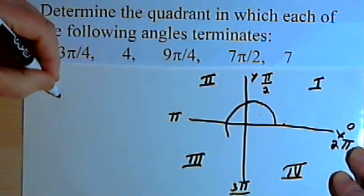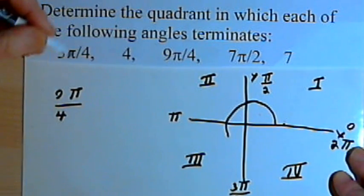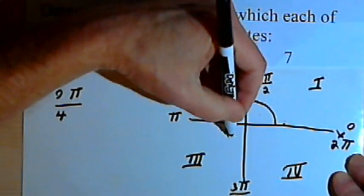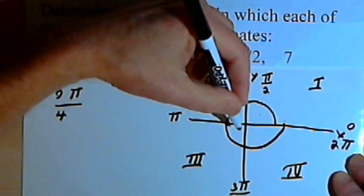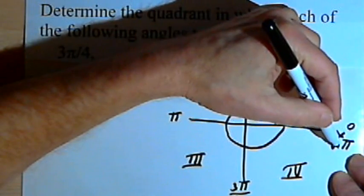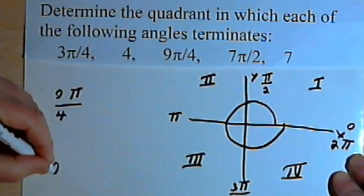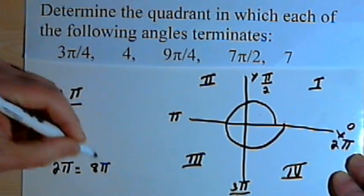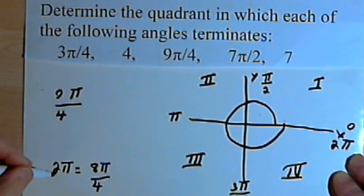For the next one, I've got 9π over 4. Well, if I went all the way around through the first, second, third, and fourth quadrants and ended up at 2π, 2π would be the same as 8π/4. 8 over 4 is the same as 2.